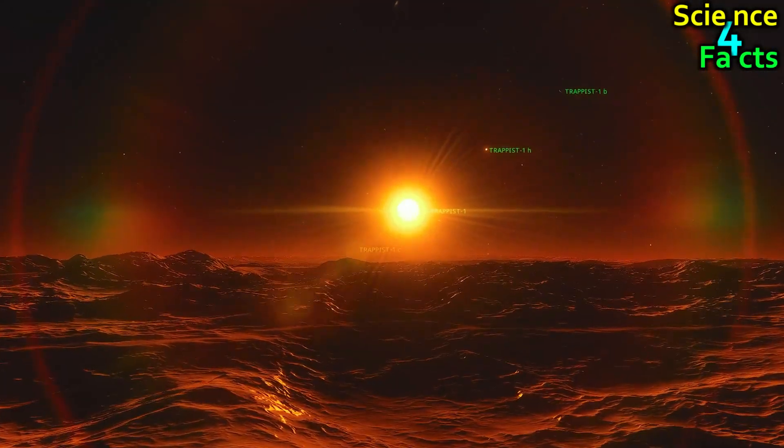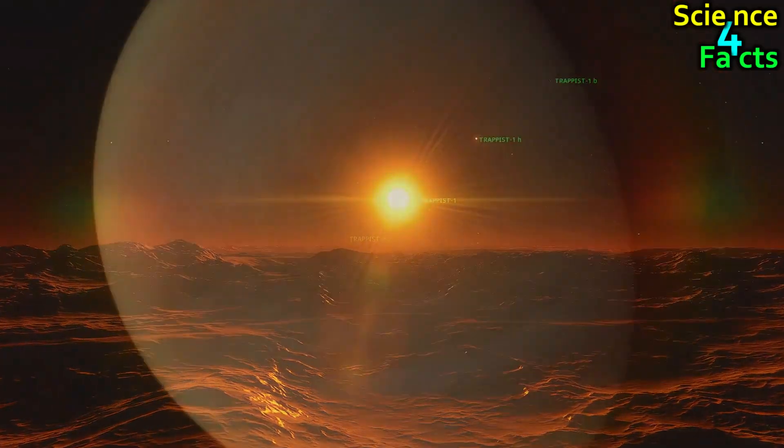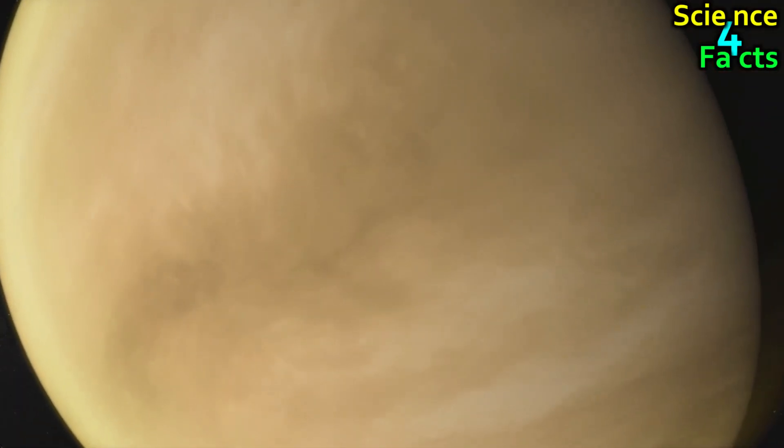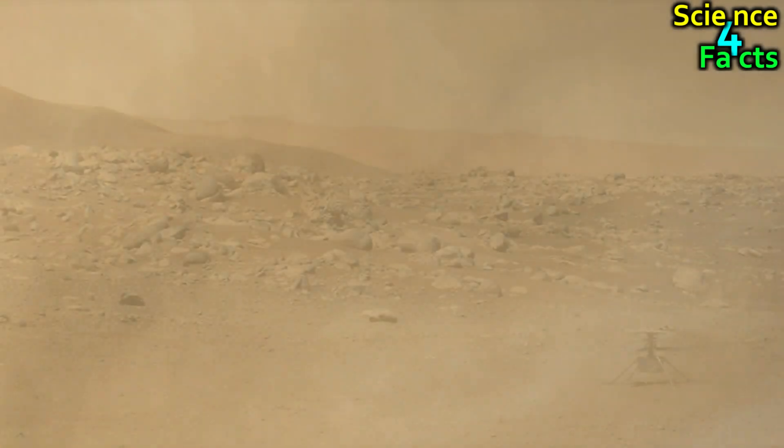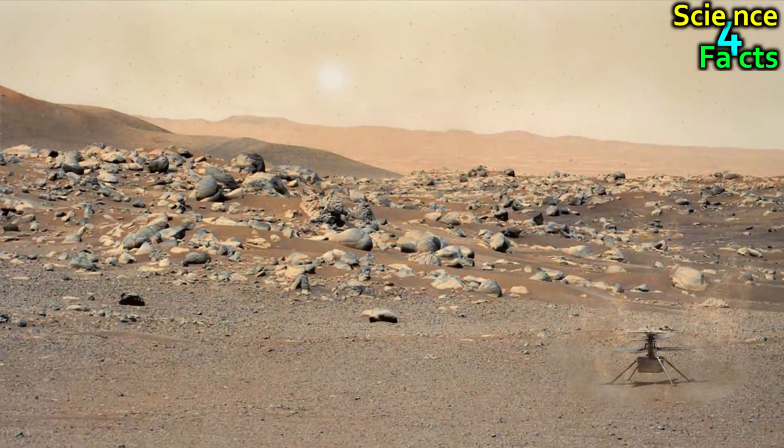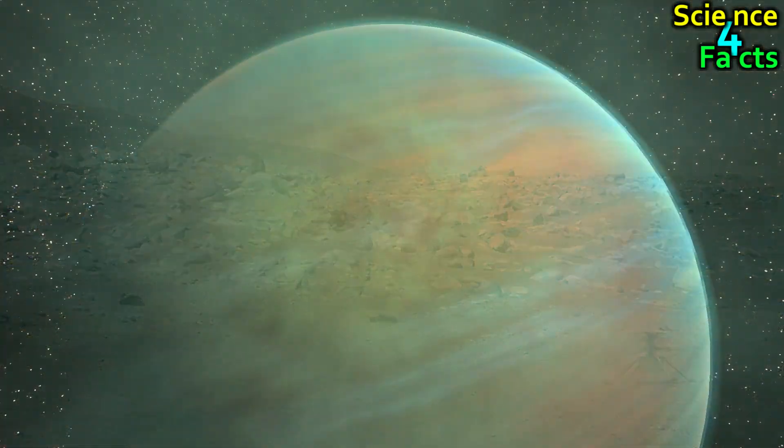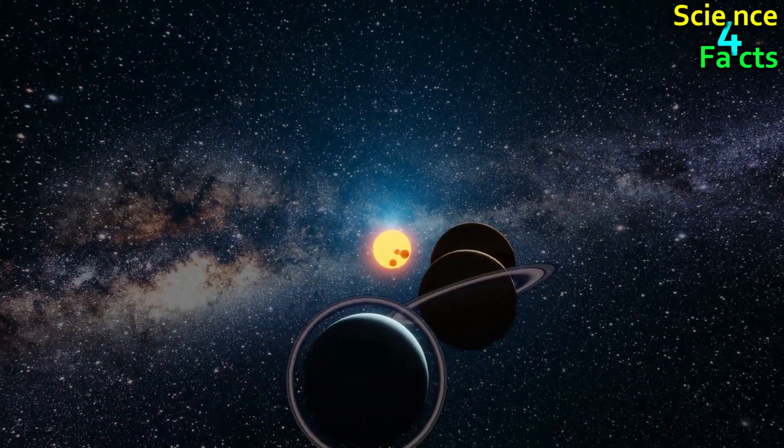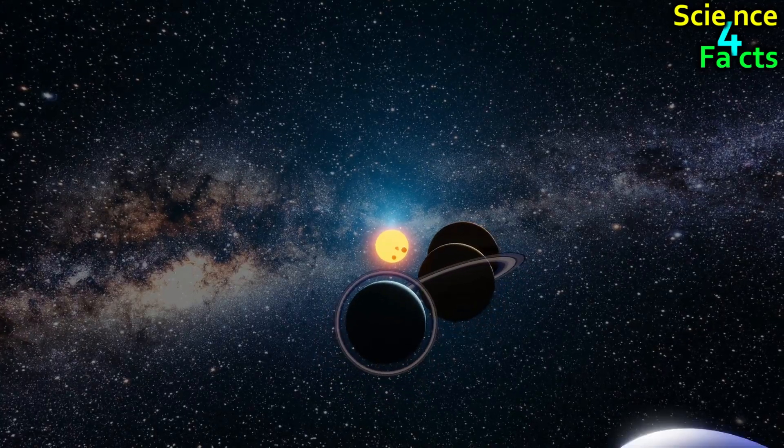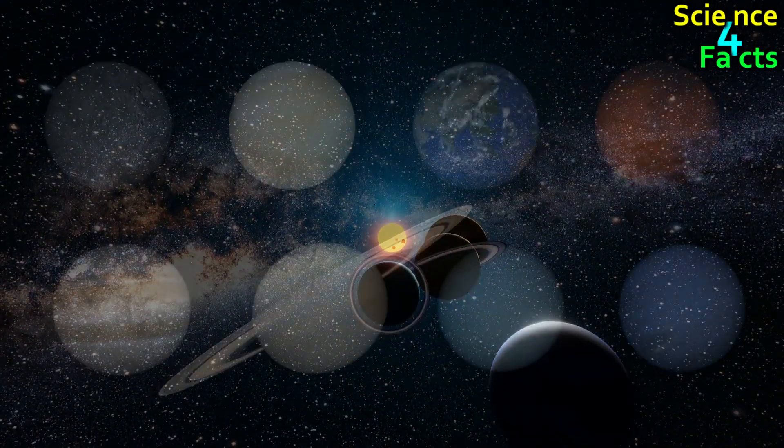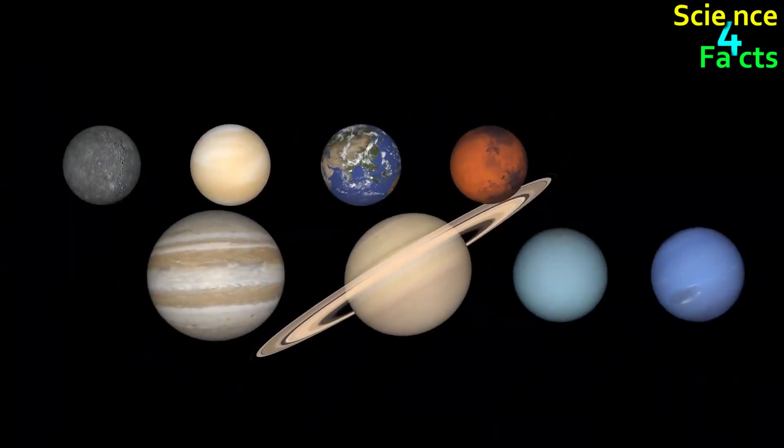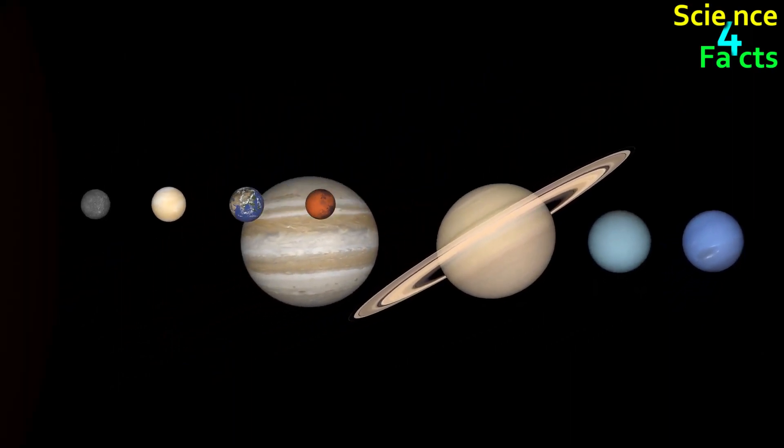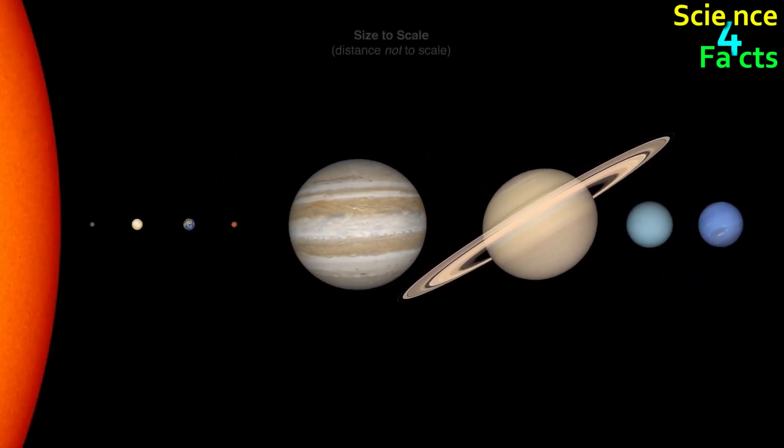One of the most fascinating aspects of these planets is their land, which can look vastly different from the landscapes we are familiar with on Earth. From rocky, cratered surfaces to vast gas giants with no solid ground at all, each planet in our solar system has its own story to tell about the nature and history of our solar system. In this video, we will take a closer look at the appearance of the surface on all of the planets in our solar system.